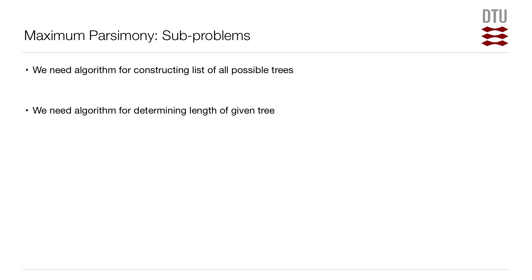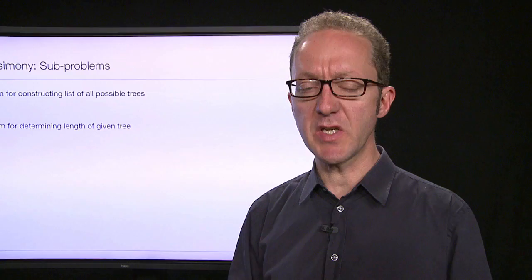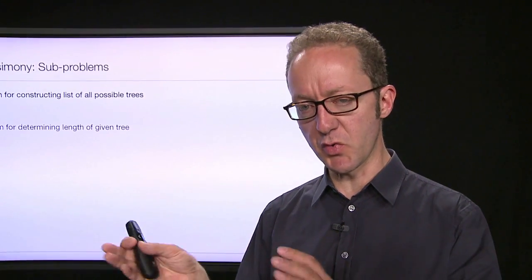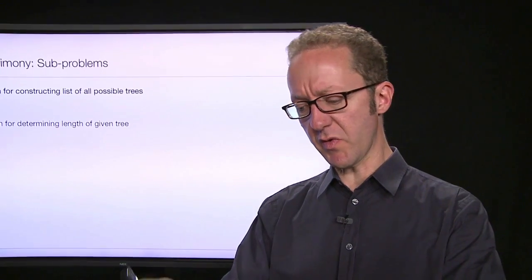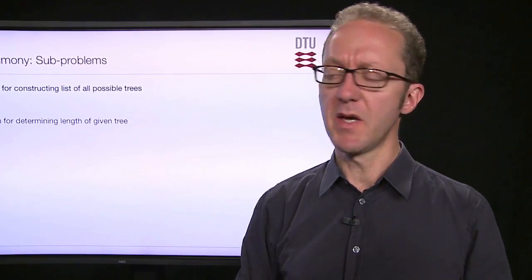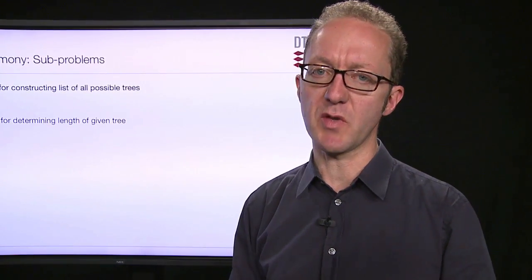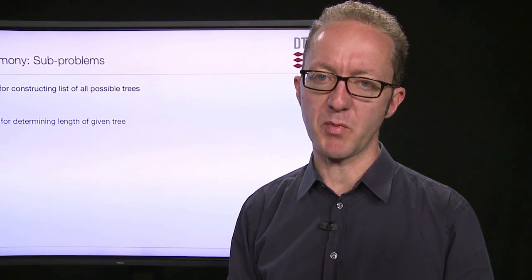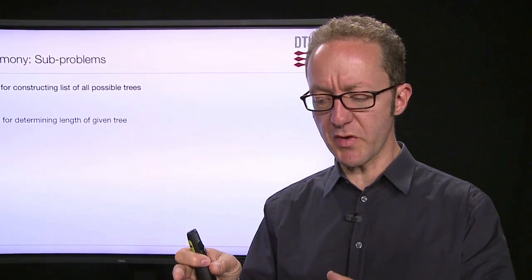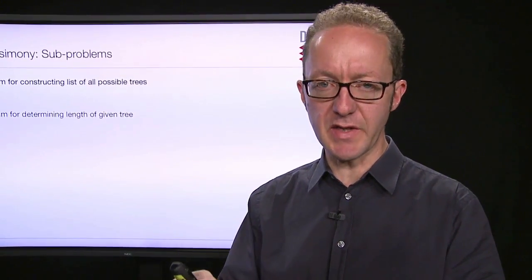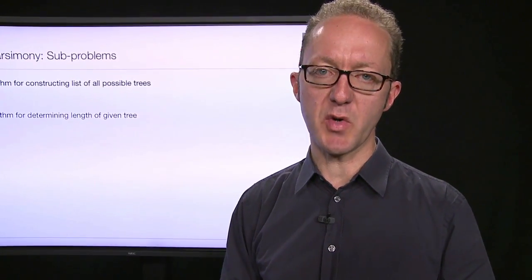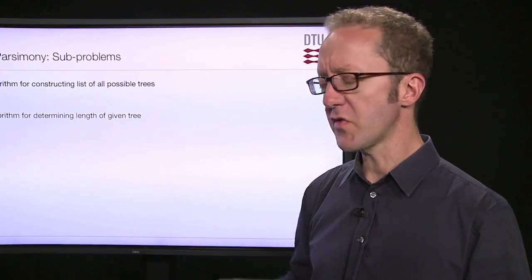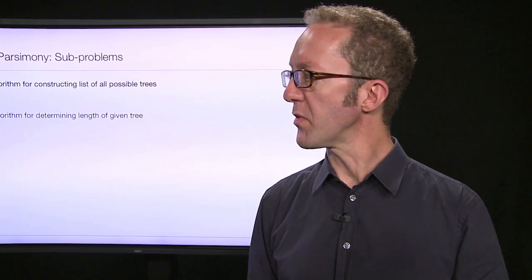Second, we need an algorithm for determining the length — the number of required mutations — for any given tree. We could do it by hand before, just by looking at the sequence, but if we have a large dataset, this will of course be impossible. So we need a computer algorithm that, for a given tree and a given dataset, can tell us how many mutations are required. Let's look at how we solve these two sub-problems.